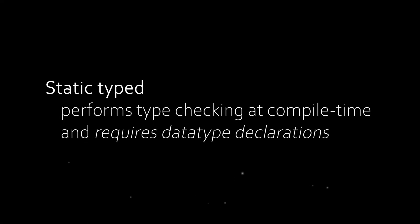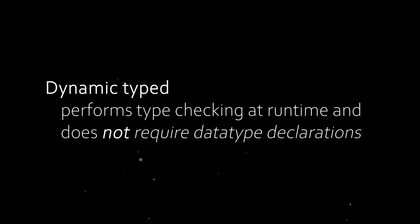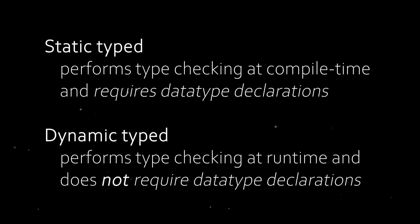These two approaches have names. In C, where we have to explicitly define the types, that's called a statically typed language. In Python, where we don't have to explicitly state a data type, that is called a dynamically typed language.